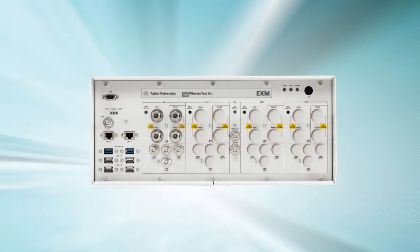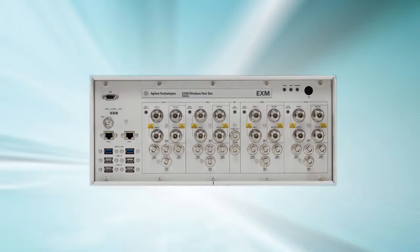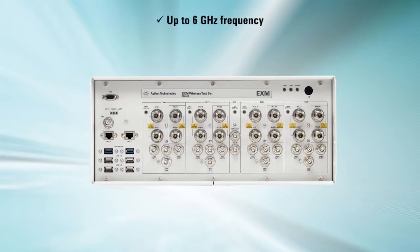Choose up to 4 TRX channels per tester. Each TRX has 4 RF ports. Additionally, you can configure each TRX up to 6 GHz frequency and up to 160 MHz bandwidth.